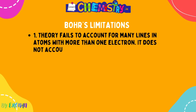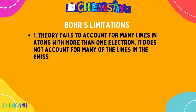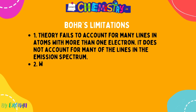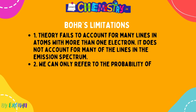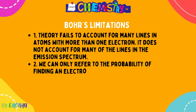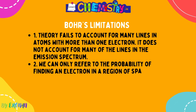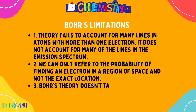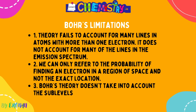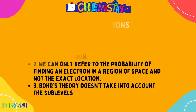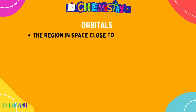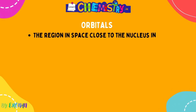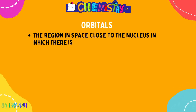Bohr's limitations — another common exam question. Bohr's theory fails to account for the many lines in atoms with more than one electron; it only works for hydrogen. We can only refer to the probability of finding an electron and not its exact location, so Bohr's fixed path idea was wrong. Bohr also did not take into account the existence of sub levels.